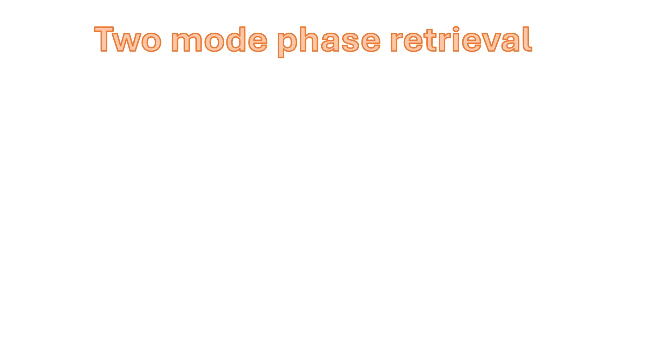Here's the simplest version of a phase retrieval problem. We have two modes: light coming here and light coming here. Two simple modes, and we want to figure out the relative phase of these modes. So we're going to interfere them.